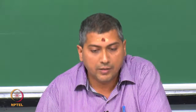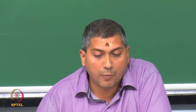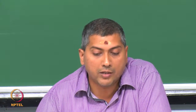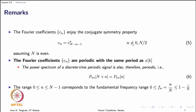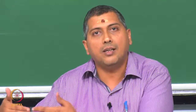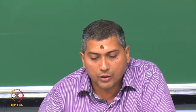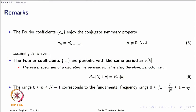The Fourier coefficients enjoy the conjugate symmetry property: c_n equals the complex conjugate of c_{N−n}, which holds for indices apart from 0 and N/2 (assuming N is even). Very importantly, the Fourier coefficients are periodic with the same period as the signal, which means the power spectrum also repeats itself. This periodicity is a consequence of the aliasing property of discrete time exponentials.